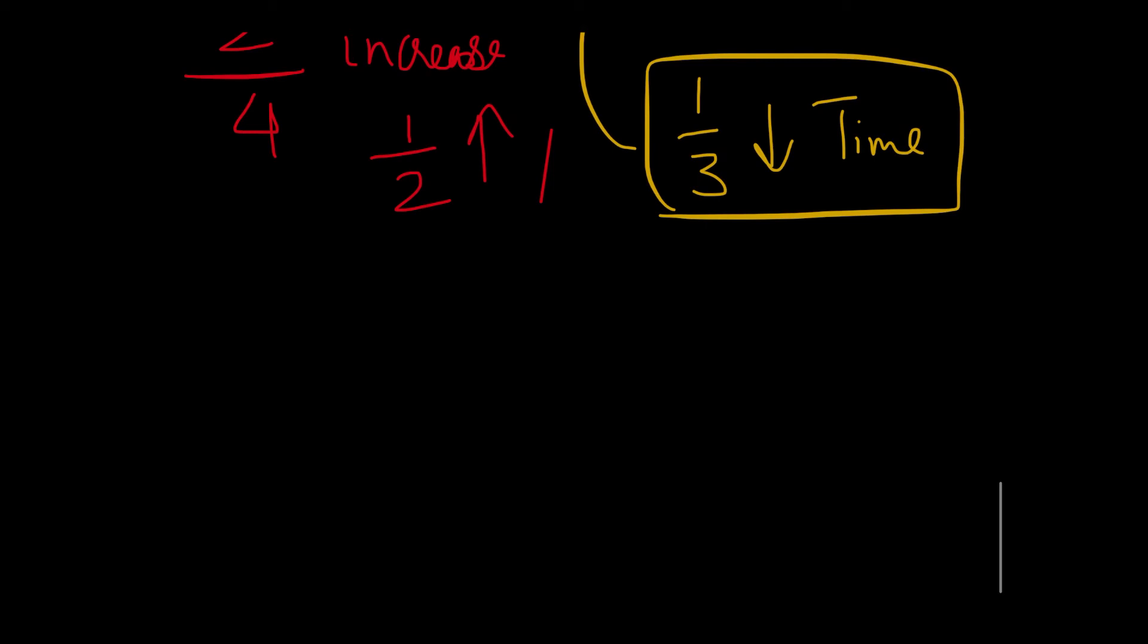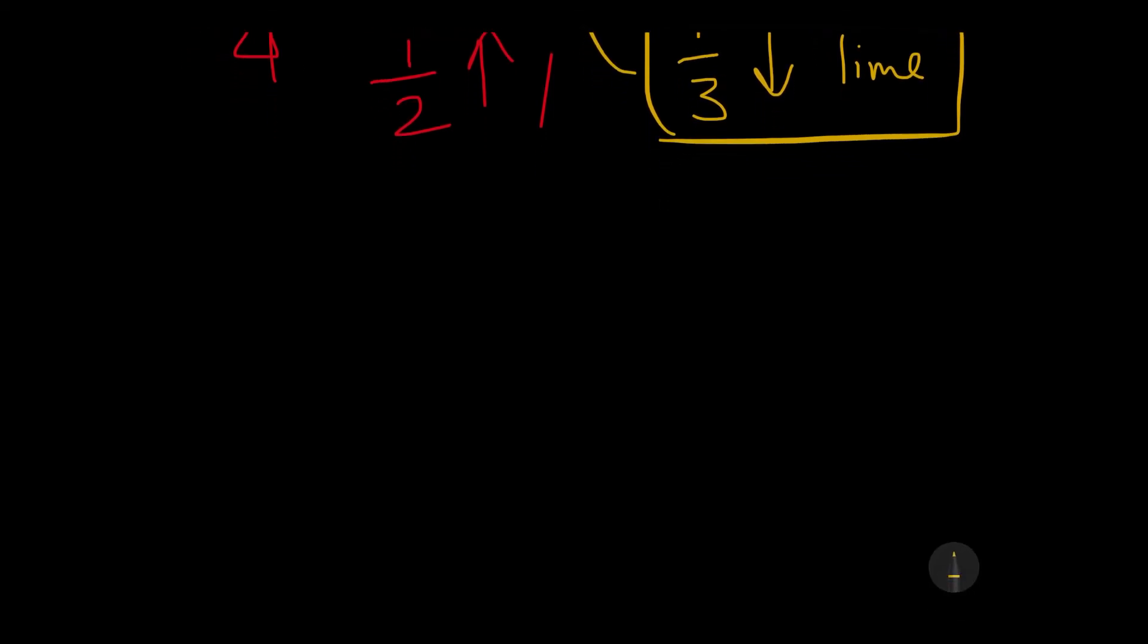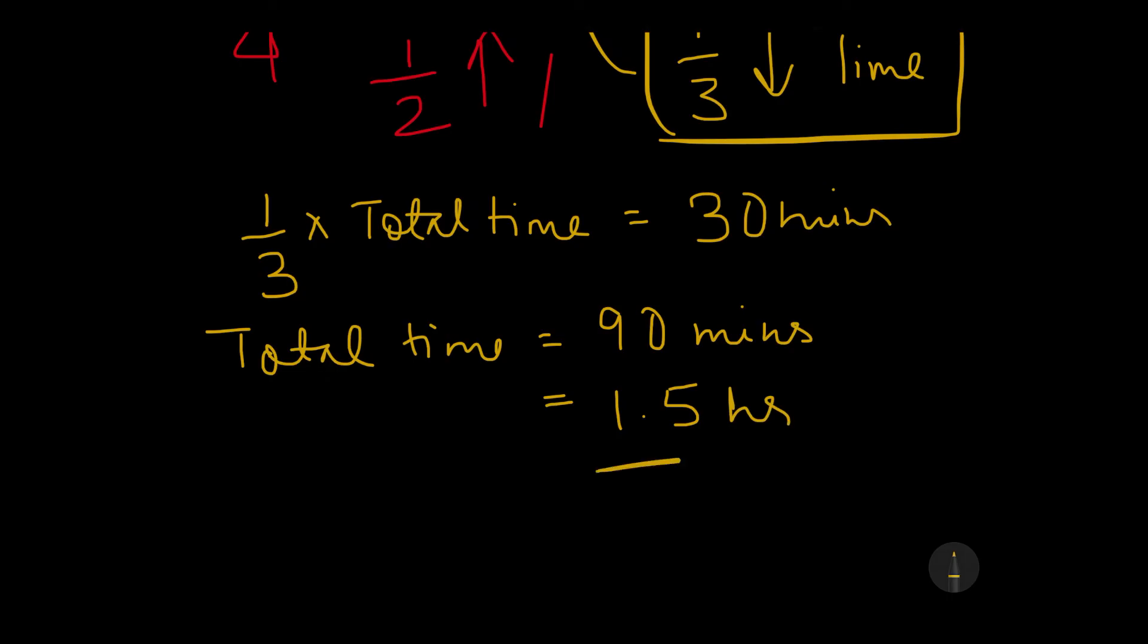So 1/3 of the time which we are saving by traveling faster equals 30 minutes of the time saved. So if I show the proper calculation, it can be called as 1/3 of the total time equals 30 minutes. If we further simplify, the total time comes out to be 90 minutes. Now the entire question is based on hours and kilometers, so we will convert this into hours which will give me 1.5 hours.